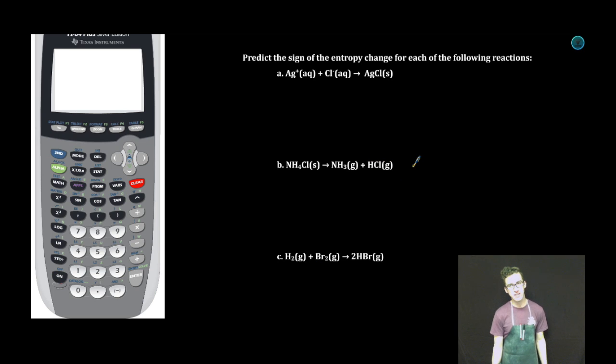All right, now let's take a look at a couple of reactions and see if we can't predict the sign of the entropy change. In this first example, you've got aqueous ions coming together, precipitating out as a solid. This implies that delta S is negative. We're going from aqueous, more disordered, to solid, more ordered. So negative delta S.